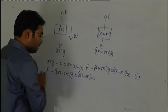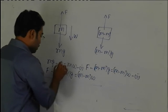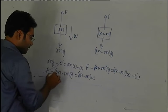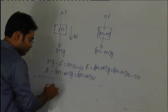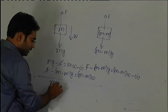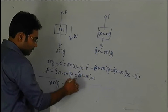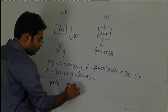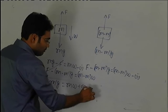If we add these equations, the force F will cancel out. After simplification, we get m'(g + w) equals 2mw.